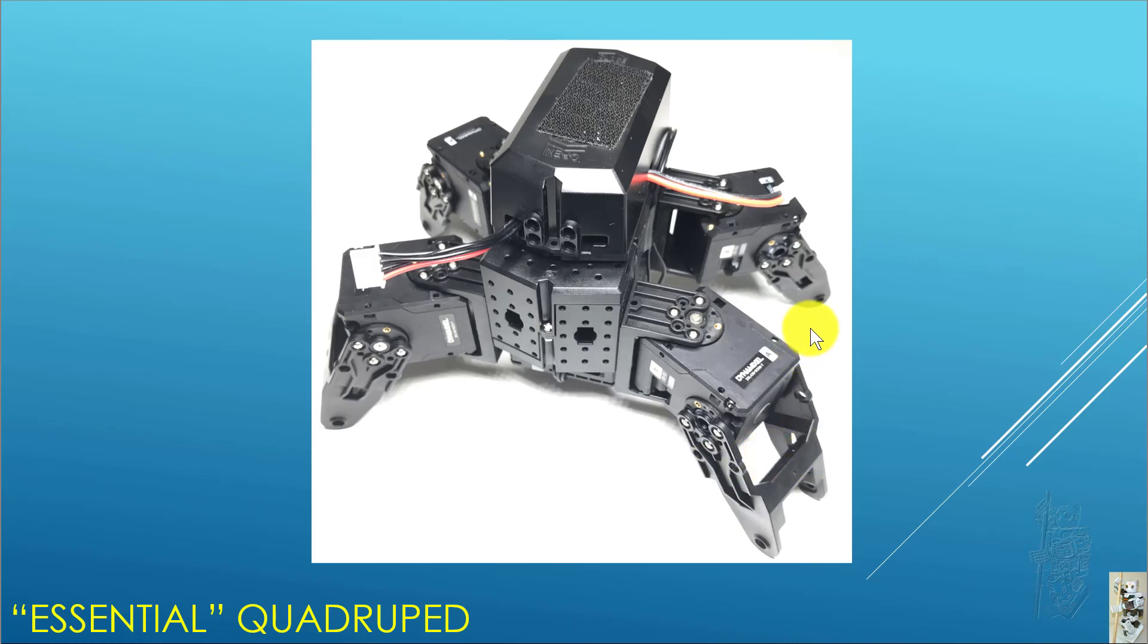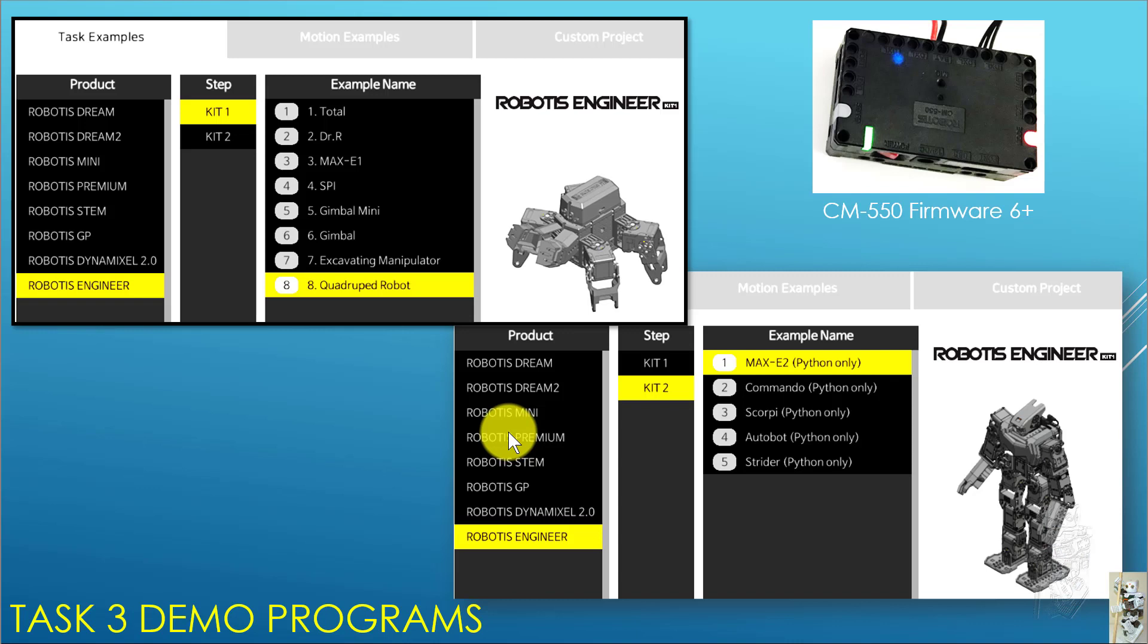So this is what the essential Quattropet looks like. Probably everybody figured out by now when you use the Task version 3 tool, the demo program that comes with Kit 1, they are all in Task 3 format. And for Kit 2, they are all in Python only.